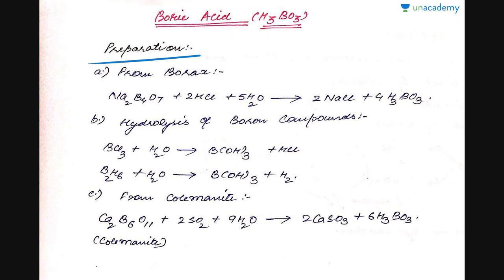Moving on to the properties and preparation of boric acid, first we will cover the preparation. Boric acid is prepared from borax by treating it with any acid in presence of water. The reaction is Na2B4O7, which is the formula for borax.